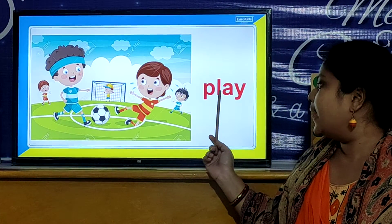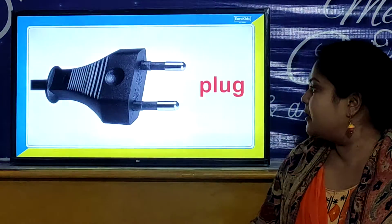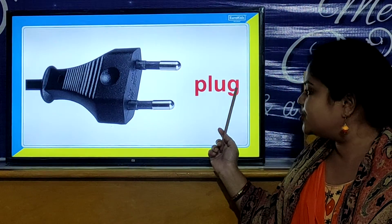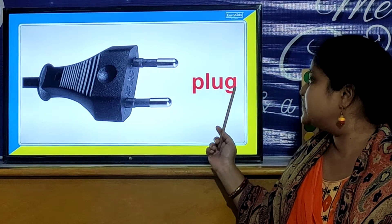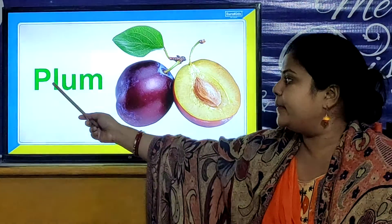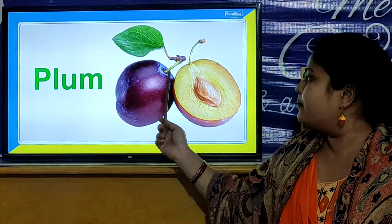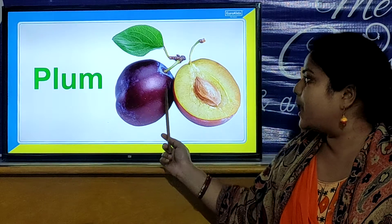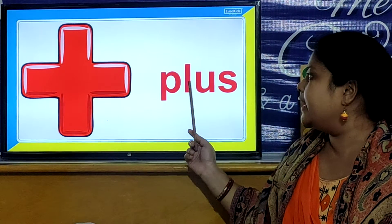P, L, A, Y. Play. And our next PL word is P, L, U, G. Plug. P, L, U, G. Plug. And our next PL word is P, L, U, M. Plum. P, L, U, M. Plum.